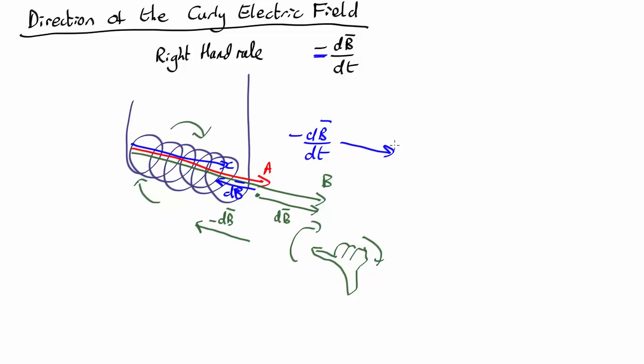So now we use the right hand rule in this direction, and we get a curly electric field that points this way.